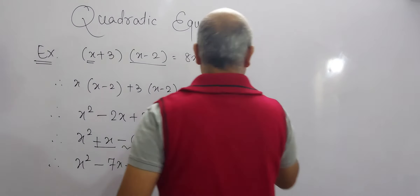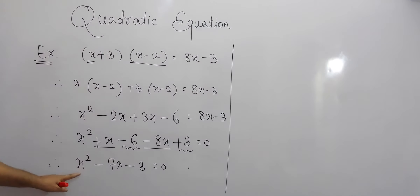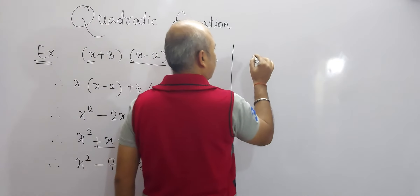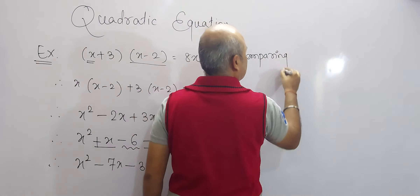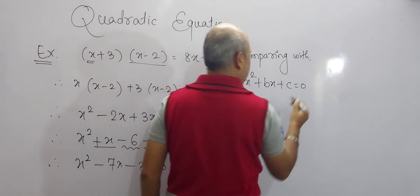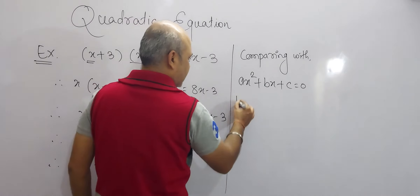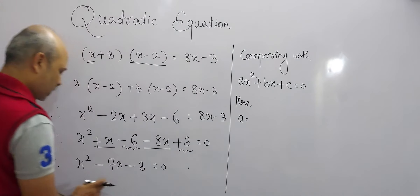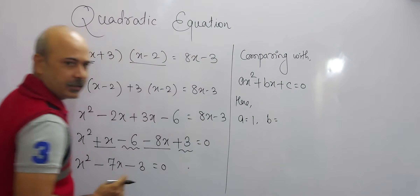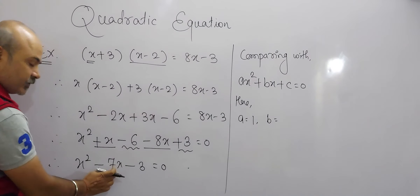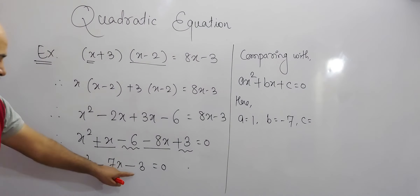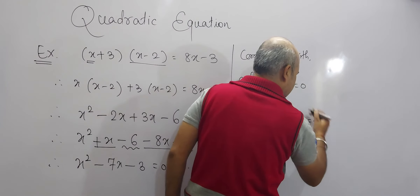Now we will find the values of a, b, and c by comparing this quadratic equation with the standard form ax squared plus bx plus c equals 0. So a is the coefficient of x squared, which is 1. The value of b is the coefficient of x, which is minus 7. And c is the constant, which is minus 3.